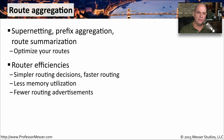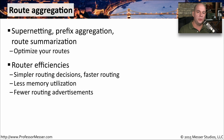This is going to simplify the methods that the routing table uses to make a decision, so our routing is going to be faster. We're also going to use less memory, since every entry in the routing table takes up space inside the memory of our router. And if we're doing dynamic routing, there will be fewer routing advertisements that we're sending out.